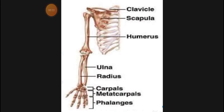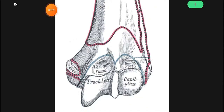The upper limb consists of the scapula, clavicle, humerus, radius, ulna, wrist bones, carpals, metacarpals, and phalanges. Any of these bones can fracture. We will study some specific fractures, starting first with the fractures of the humerus.